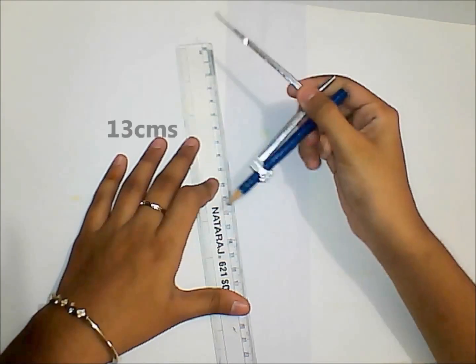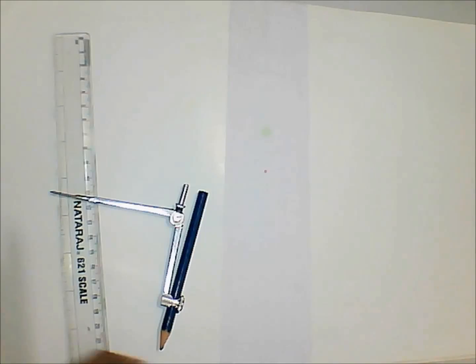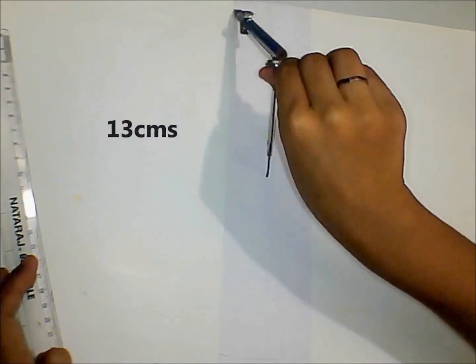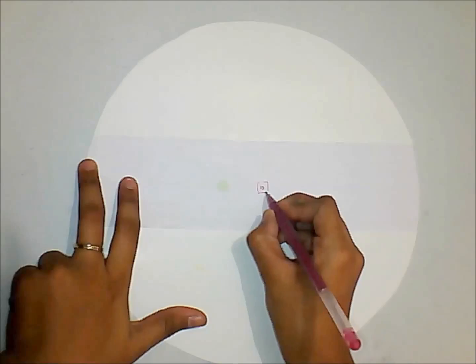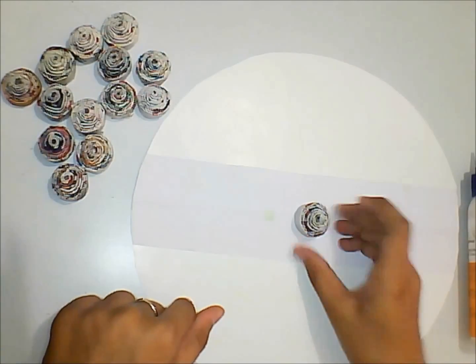Now let us take the thick cardboard. Using a compass, you can measure 13 centimeters. Mark a point at the center and from that center, you can draw a circle of radius 13 centimeters. You can cut it using a pair of scissors. Mark a square shape at the center and cut it too. Now take one of the dome shapes, place it at the center, and stick it using glue.